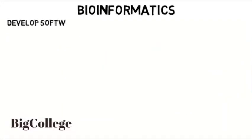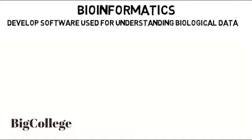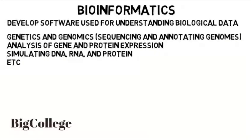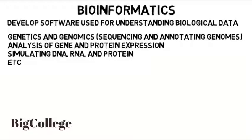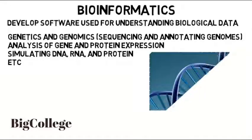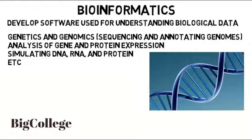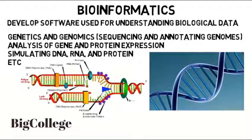A unique area of computer science is bioinformatics, where you develop software used for understanding biological data — something your school may offer electives in within the computer science department. Bioinformatics techniques are used in genetics and genomics to help in sequencing and annotating genomes, analysis of gene and protein expression, simulating DNA, RNA, and proteins, and much more. If you want to dive into this field, you'll learn more about biological concepts, so if you enjoy biology but also want to go into computer science, programming, and algorithm design, this might be a good field for you. You could enter through a master's program after a bachelor's in computer science or science.